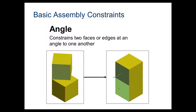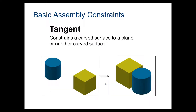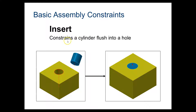An angle constrains two faces or edges at an angle to one another, so you go from mating to then changing the angle. A tangent constrains a curved surface to a plane or another curved surface — here we have a cylinder tangent constrained to a cube. An insert constraint will constrain a cylinder flush into a hole, so if you had a pin or a screw and a hole, you can insert constraint that into a part.